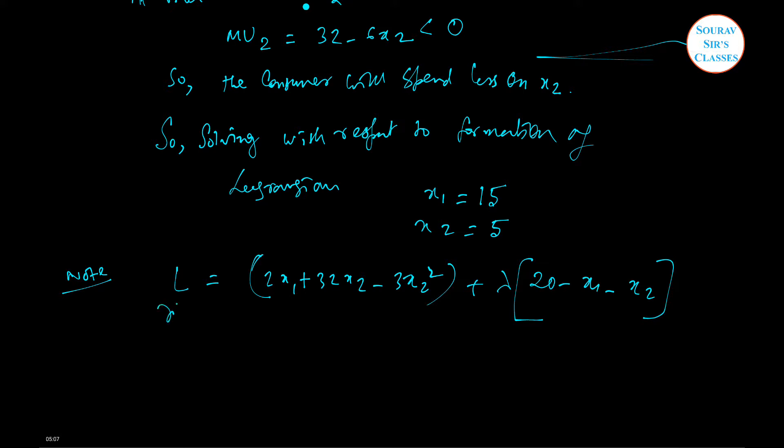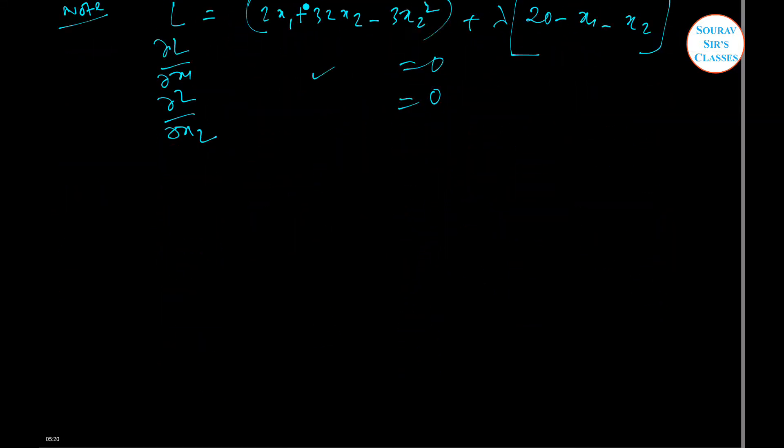You just need to del L del x1, del L del x2, and del L del lambda, and just by calculating and equating with 0 each time you will be able to solve it. So now we will be going to the next question.